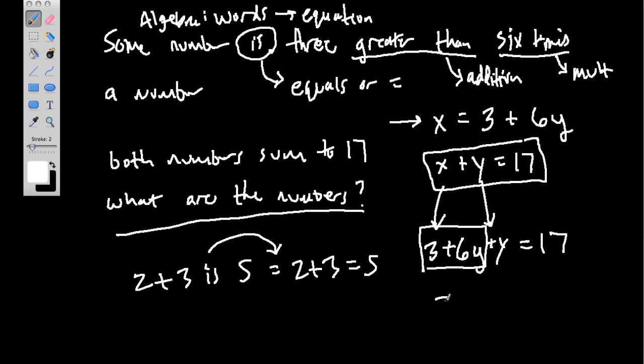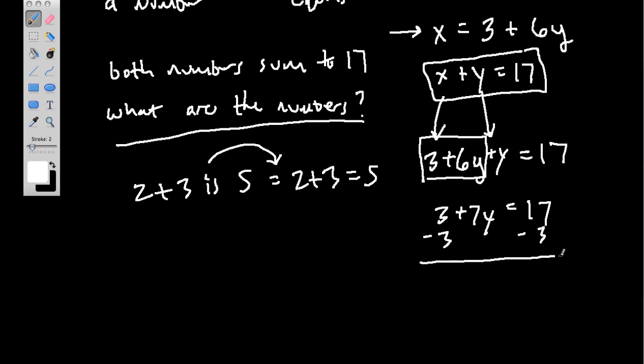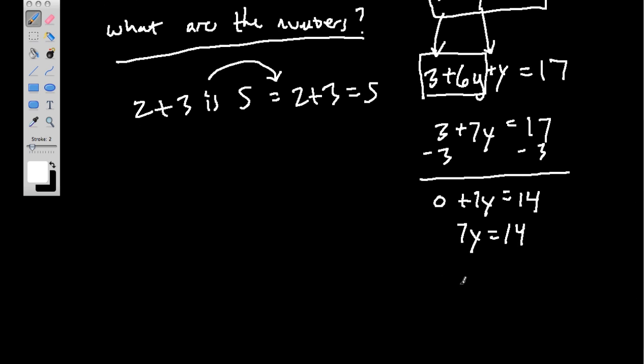So now we have 3 plus 7y, because 6y plus 1y is 7y, equals 17. So then what do we do here? We want to figure out what y is, so we can subtract 3 from both sides. 3 minus 3 is 0. So 7y we haven't touched yet. 17 minus 3 is 14. And I'm going to ignore this 0 right here. So 7y equals 14. y then is 2, because 2 times 7 equals 14. That's what y equals.